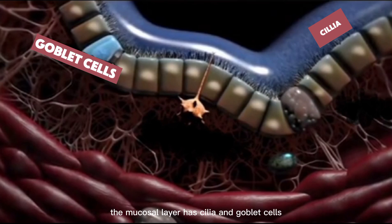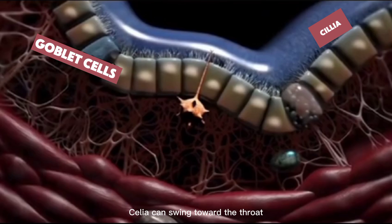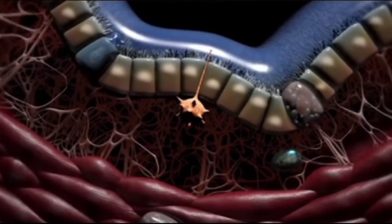The mucosal layer has cilia and goblet cells. Cilia can swing toward the throat, and goblet cells can secrete mucus with immune properties.